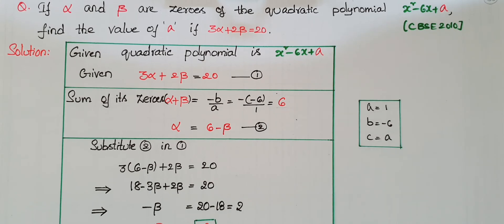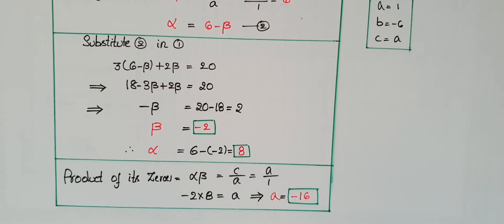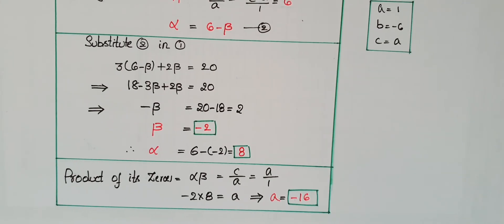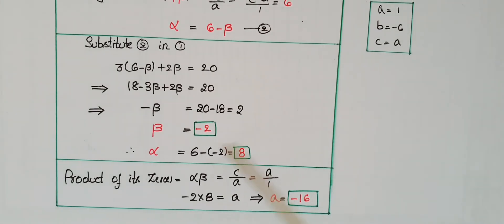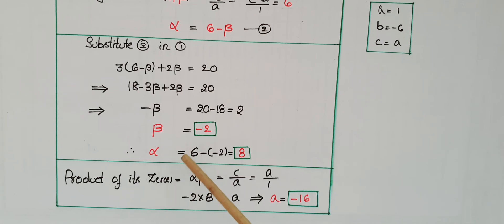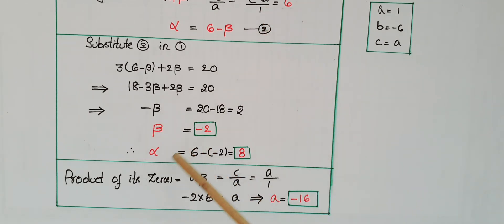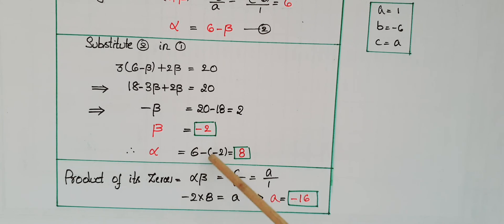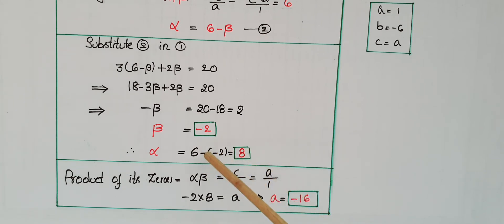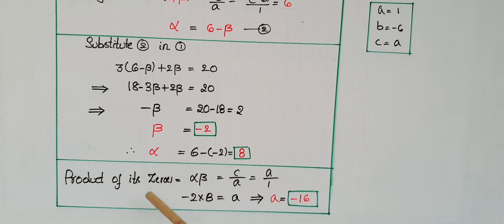So beta is equal to minus 2. Therefore alpha is equal to 6 minus beta, that is 6 minus (minus 2), which is 6 plus 2, so alpha is equal to 8.